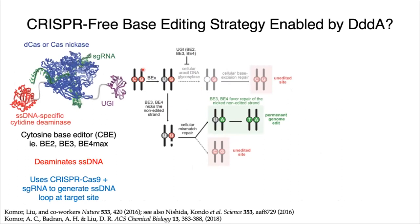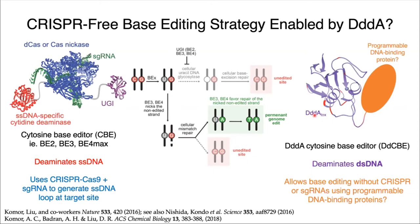The CRISPR-based system that performs C to T editing on nuclear DNA, known as CBE, relies on a Cas9 protein to generate a single-stranded DNA bubble. Cytidines within that single-stranded DNA are then deaminated to form uracil, which is read as a thymine by DNA polymerases in repair processes, resulting in a permanent CG to TA edit. We wondered: given DddA's unique property of deaminating double-stranded DNA, could we develop an equivalent cytosine base editor that does not require CRISPR or guide RNAs for programmable DNA binding, thereby rendering such a base editor amenable to editing mitochondrial DNA?